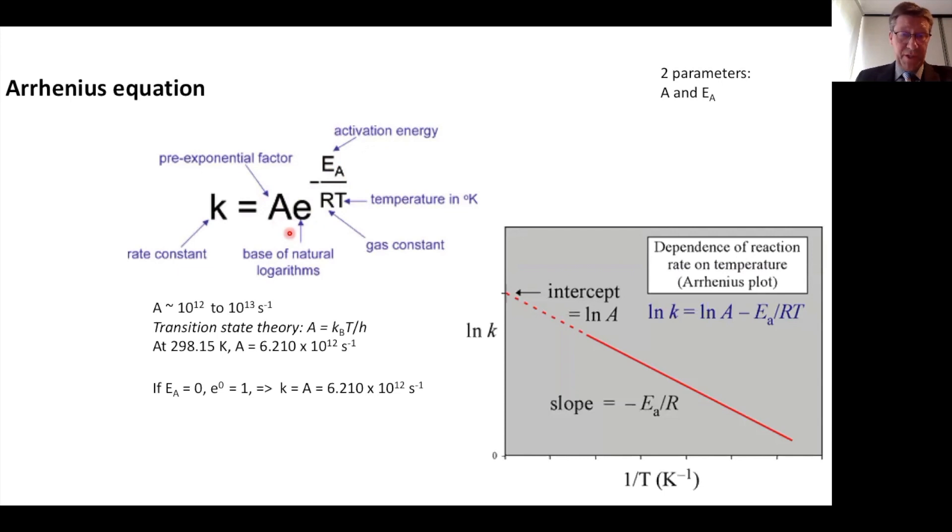If you look at transition state theory, then it is KBT over H. If we plot the natural logarithm of the rate versus one over the temperature, then the slope gives us the activation energy. The Arrhenius equation contains two parameters: the pre-exponential factor and the activation energy.